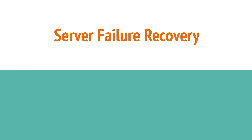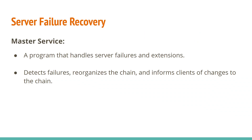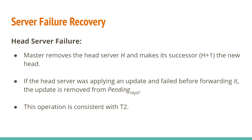Thanks to the well-defined protocol, recovering from a server failure isn't too difficult. Server failures and server extensions are managed by a program called the Master Service. This is a program modeled as a single process that never fails, but in practice it is implemented across multiple hosts. The roles of the master include detecting server failures, reorganizing the chain to recover from a failure, and notifying clients about changes to the chain. In the event of the head server failing, the master service removes the head and makes the next server the new head. If the head was applying an update and failed before forwarding the update, then removing the head would also effectively remove the update from the pending list, which was in the pending list because it hasn't been processed by the tail server yet. Removing the update isn't an issue since the client will notice that it doesn't get a reply and reissue the request.